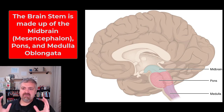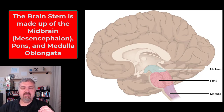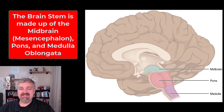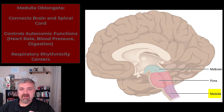So let's go ahead and start with the brain stem, which is three parts: the midbrain, also known as the mesencephalon, the pons, and the medulla oblongata — which I love to say. So let's start there.